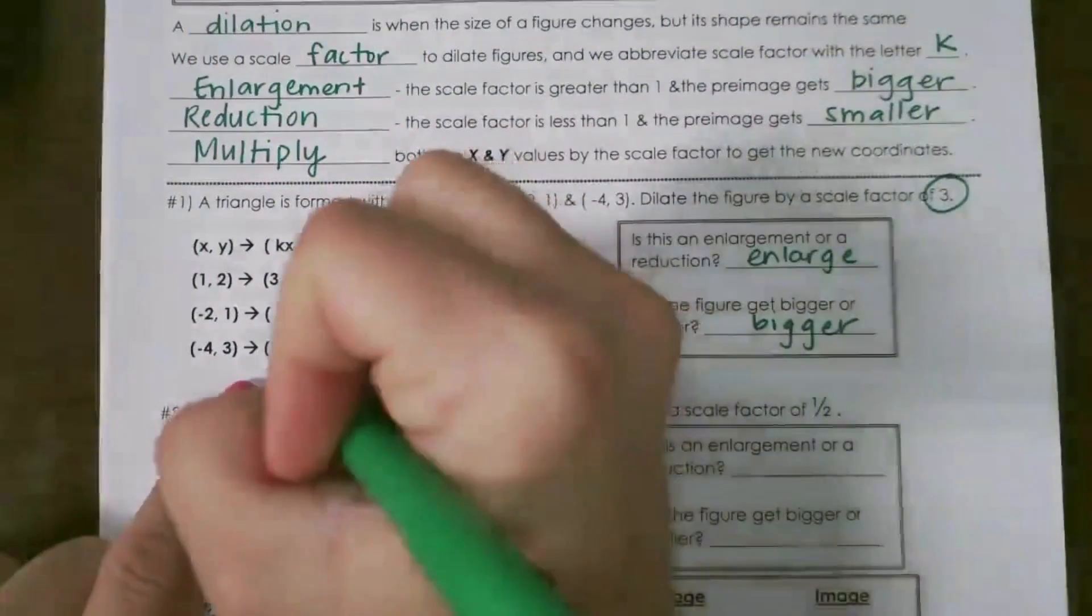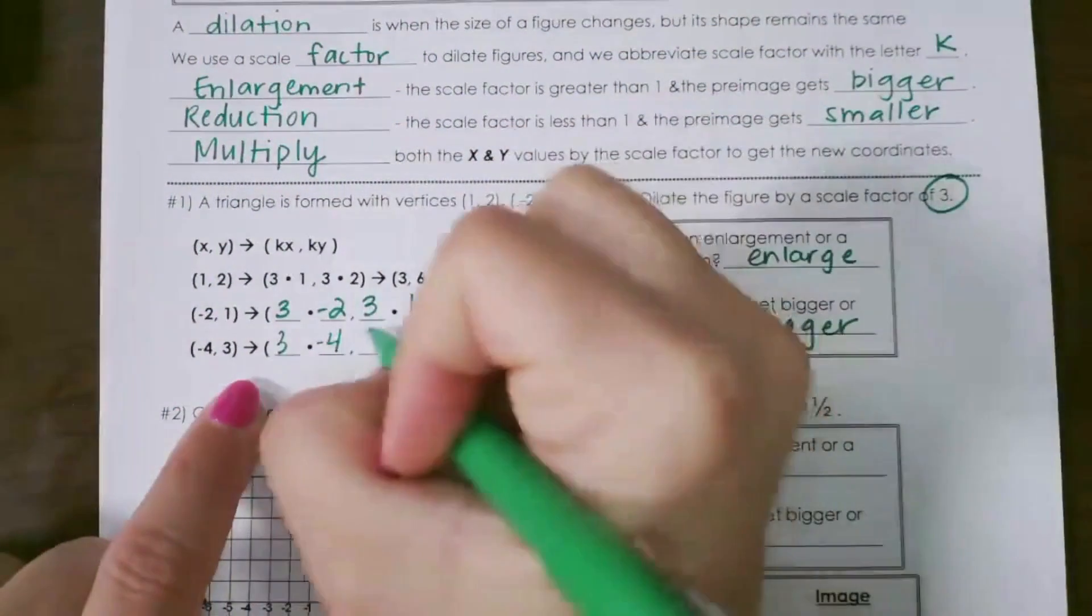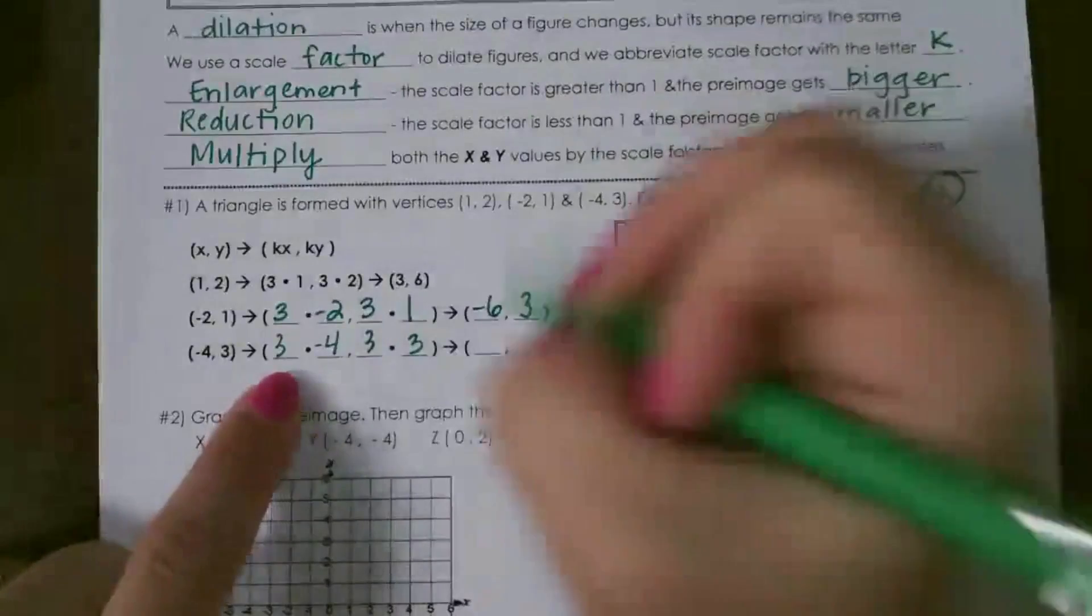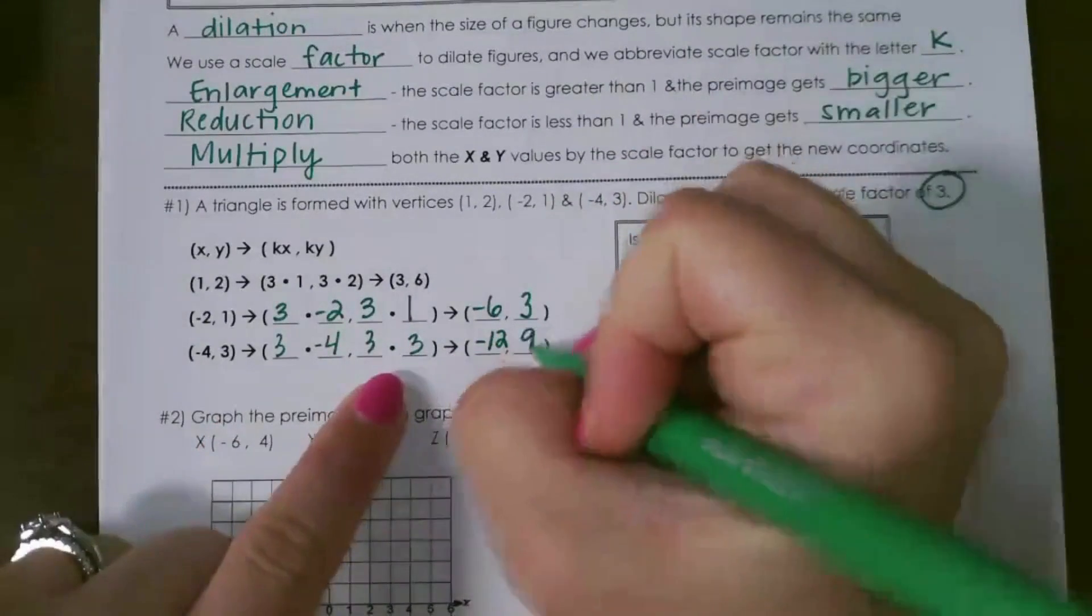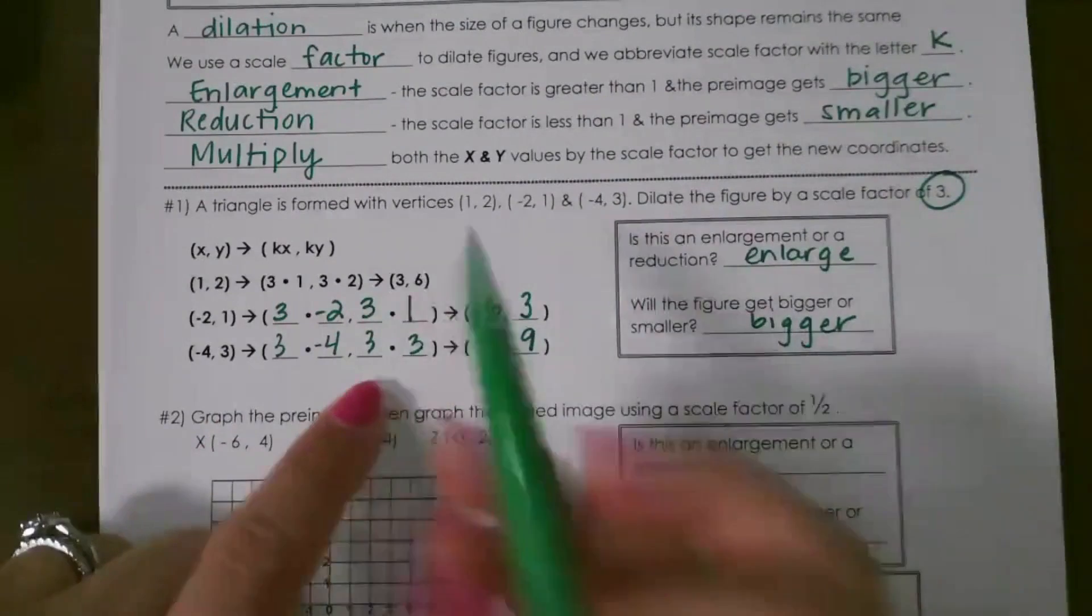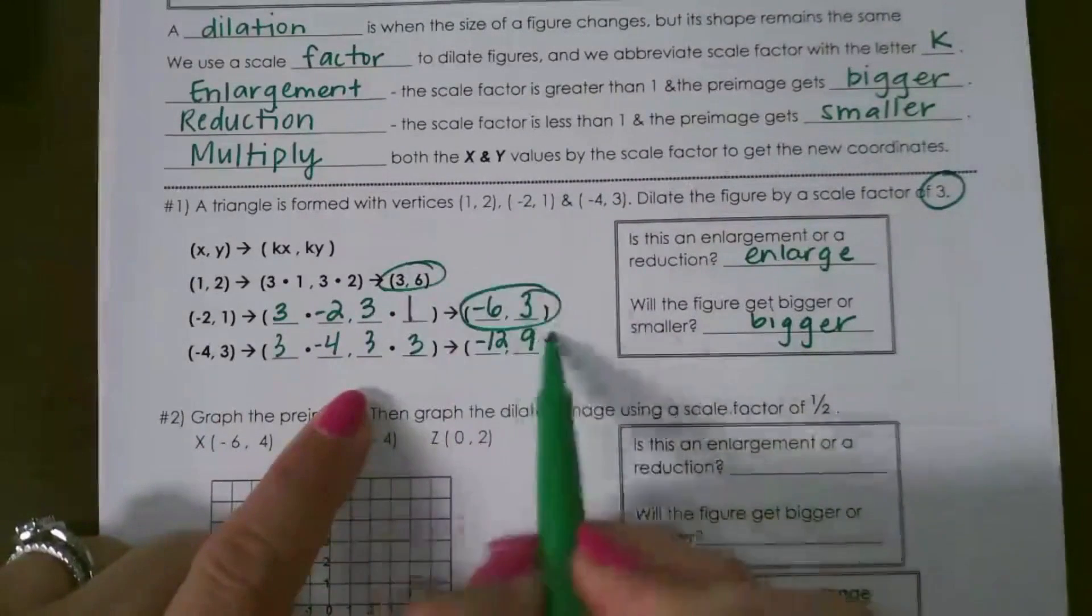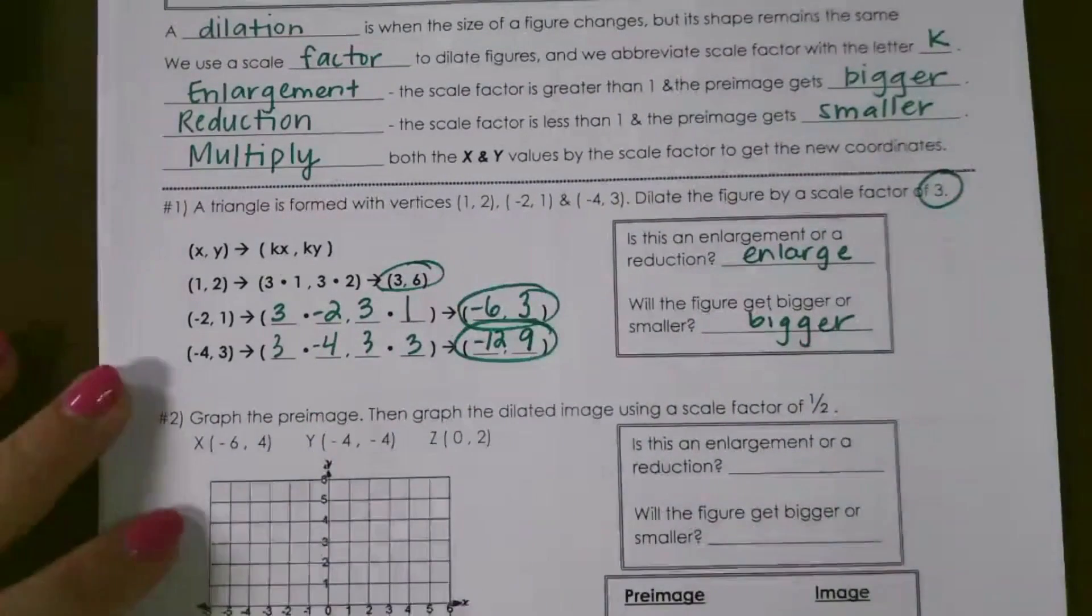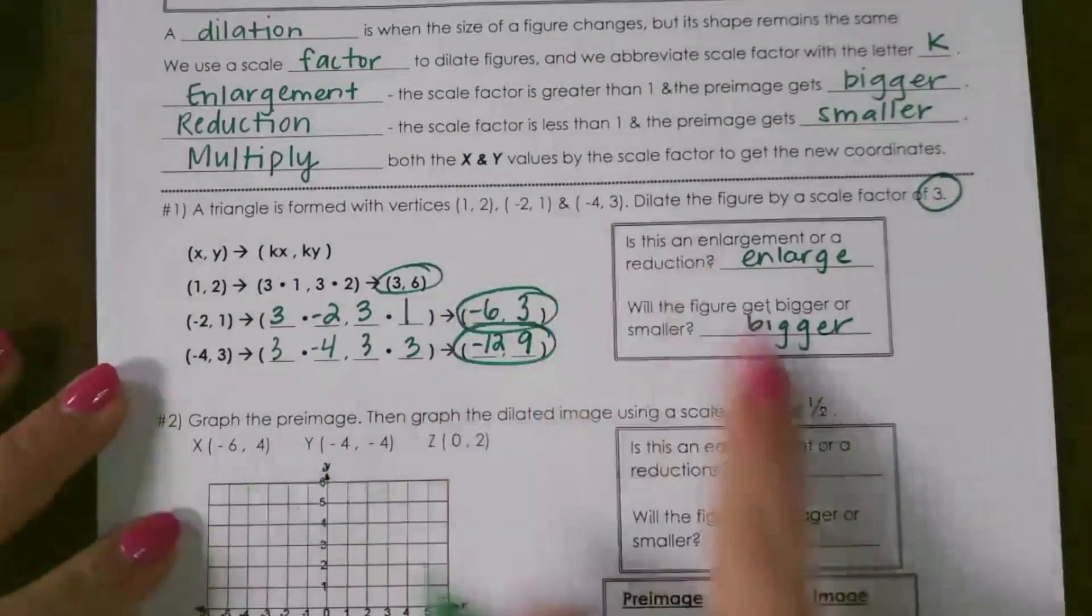For the next one, I want to multiply each of them by 3, so (-12, 9). So again, these would be our new ordered pairs for our new triangle, which would take our original triangle and make it larger.